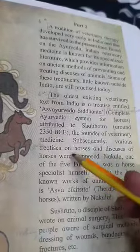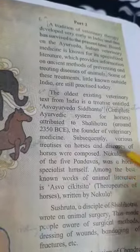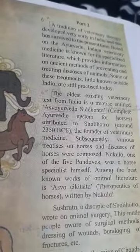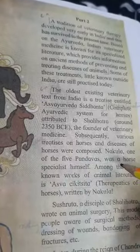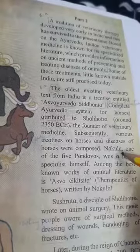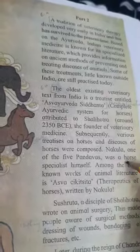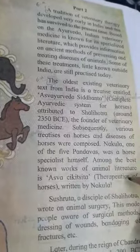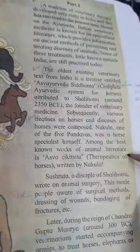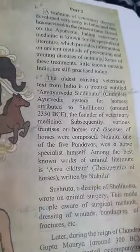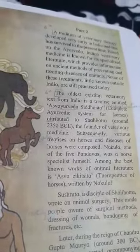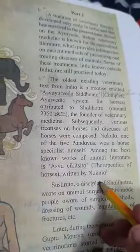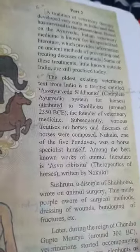Nakula, one of the five Pandavas, was a horse specialist himself. Among the best known works of animal literature is Ashwa Chikitsa — the therapeutics of horses — written by Nakula. This is considered the best known work in ancient animal literature.